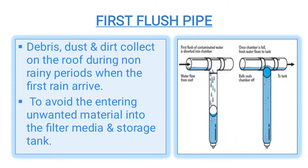Next is the first flush pipe: it is used to avoid the entry of unwanted material coming with the rainwater into the filter media and storage tank. For example, dust, dirt, and debris are collected on the roof during the non-rainy period, and when the first rain arrives it comes with the rainwater. To overcome this problem, we use the first flush pipe.